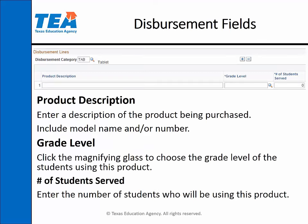Most of the categories in the technological equipment disbursement will have the same fields. The only difference is that the calculator disbursement category will have an additional field to enter the model number. For the product description, enter a description of the product being purchased, including the model name and/or number.